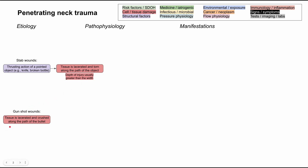In a gunshot wound, the tissue is lacerated and crushed along the path of the bullet. The severity of injury is related to the kinetic energy of the bullet. Kinetic energy can be summarized as one-half mv squared, where m is mass — the weight of the bullet — and v is velocity, or the speed of the bullet.